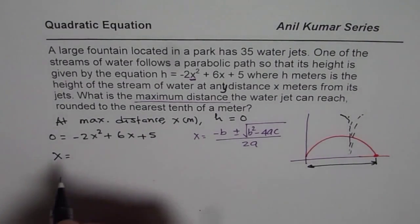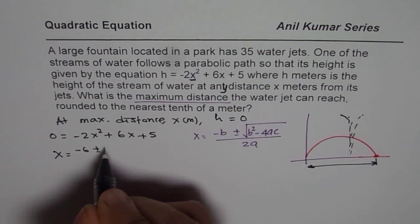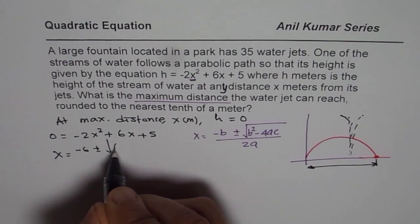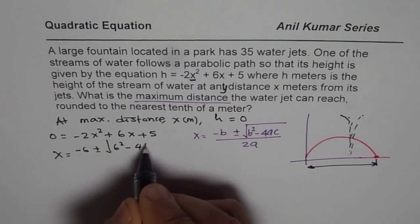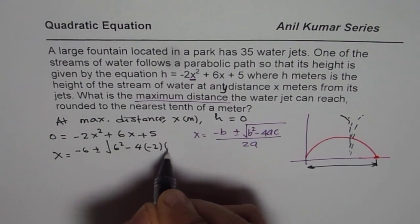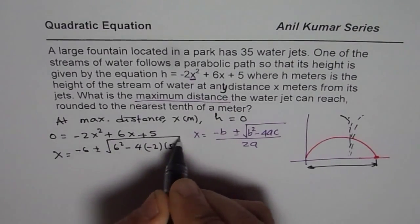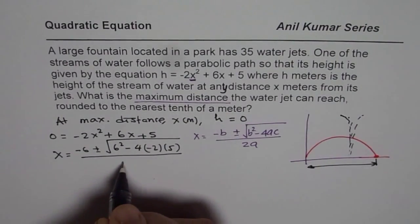So minus 6, we have minus 6 plus minus square root of 6 squared minus 4 times a is minus 2 times 5, divided by 2.